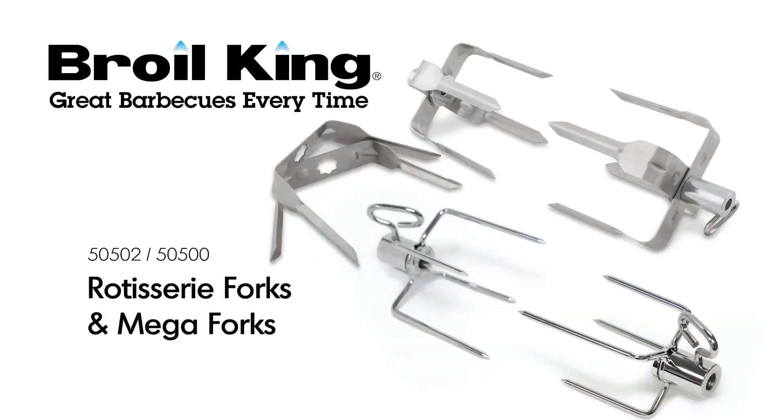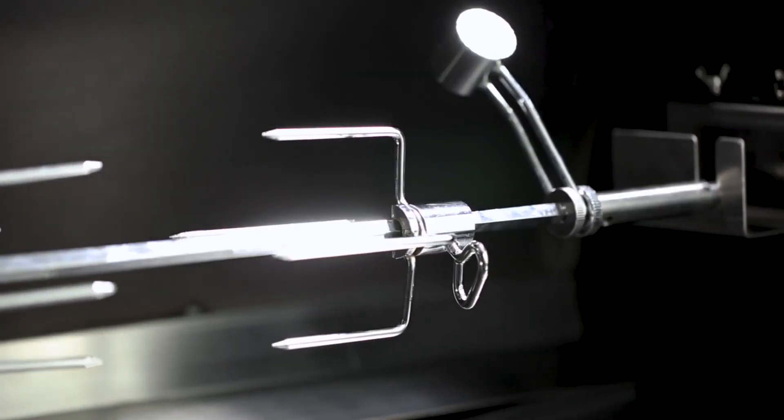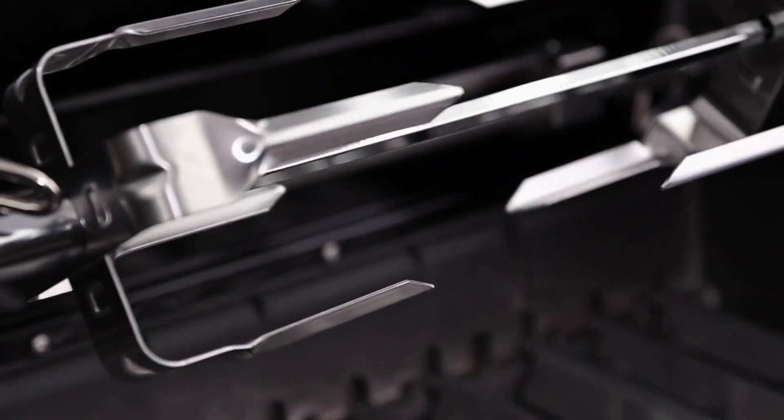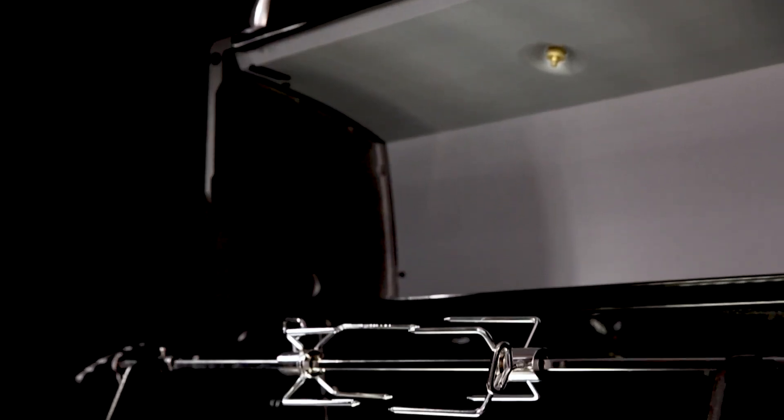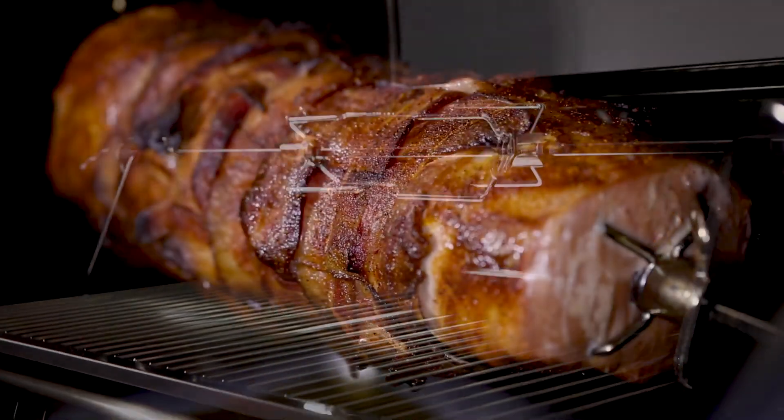The Broilking Rotisserie Forks and Megaforks. No rotisserie setup is complete without a set of Broilking Rotisserie Forks or Megaforks. A rotisserie is the most effective way to prepare any cut of meat on your grill.